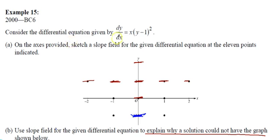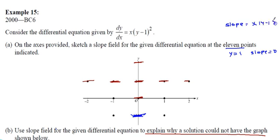The differential equation given is dy/dx = x(y-1)². On the axis provided, sketch the slope field at the 11 indicated points. When y is 1, the slope is 0 based on the equation — you can see that the slope is x(y-1)², so whenever y equals 1, slope is 0. Those are the horizontal lines.